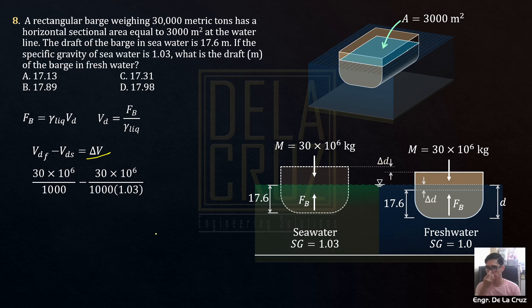And the change in volume is equal to the area, 3000 square meters, times depth. Now we can consider this one as a rectangular parallelepiped with thickness D, times delta D. Of course at this part, assuming it's not curved. Let's get the delta D so that the depth in fresh water, again, we will add that's 17.6 plus delta D. And the answer is 17.891.